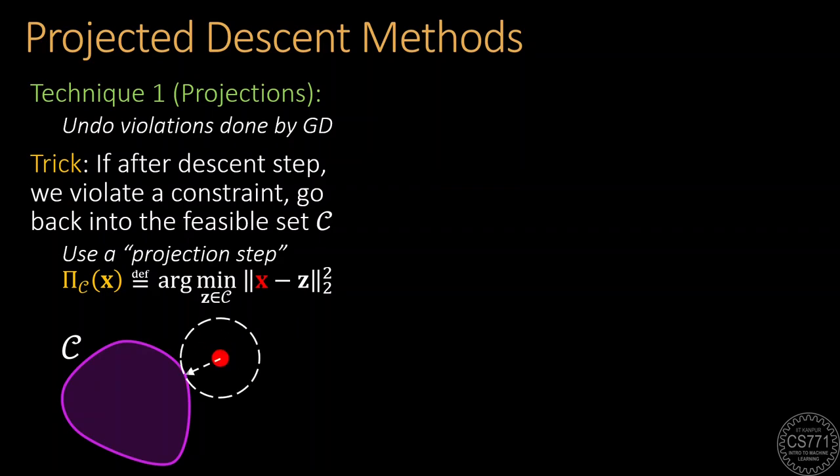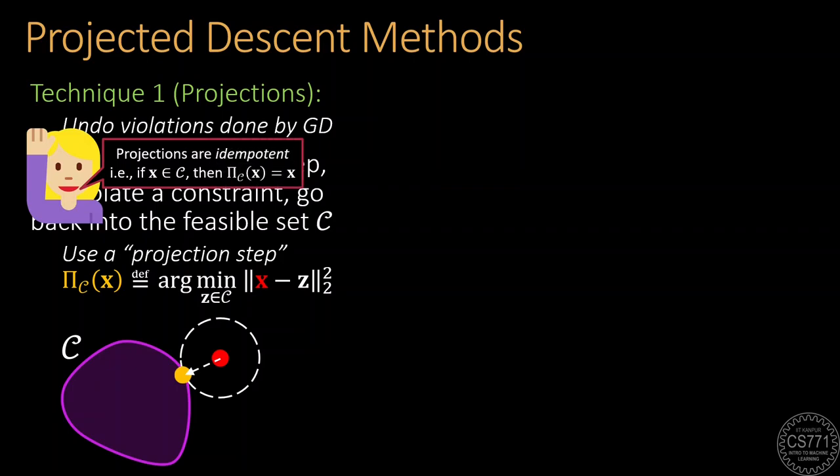Given a point X and a set C, the projection of X onto C is defined as the point closest to the point X that is also in the set C. If the point X is already in the set C, then the projection is defined to be the point X itself.